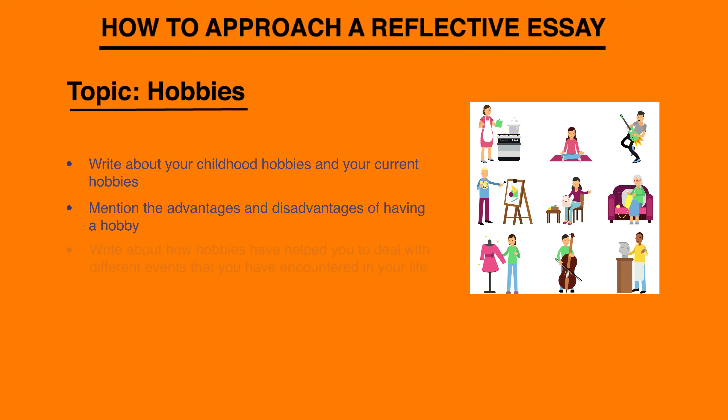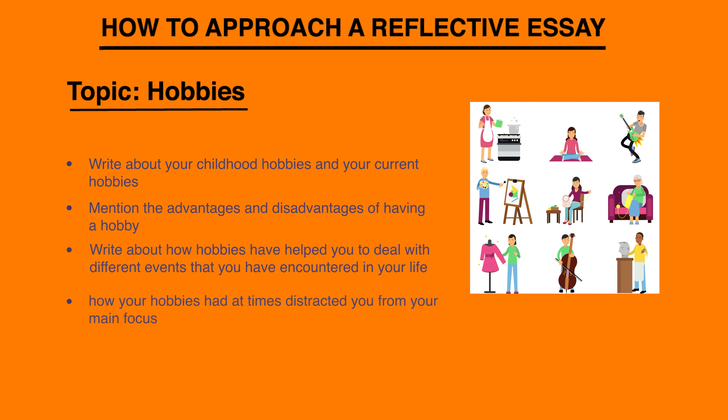You can write about how hobbies have helped you deal with different events or rough patches you've encountered in your life — the merits of hobbies in your life. You can also write about how your hobbies have at times distracted you from your main focus. This is how you include threads of argument in your essay. So the advantages and disadvantages, the merits and demerits of having a hobby. You can also write about modern and traditional hobbies.